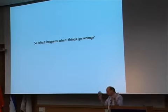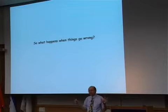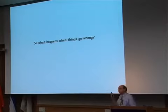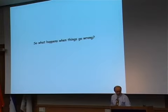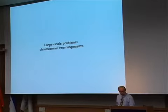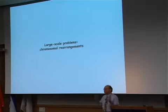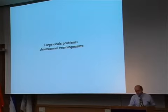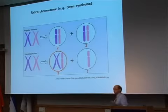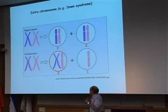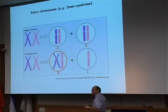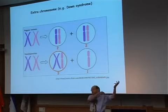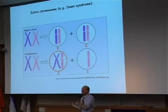That's all we need to know about normal biology. Now let's talk about when things go wrong, because the next two days are about when things go wrong. Let's start with the big picture — large-scale chromosome rearrangements. The biggest large-scale rearrangement one can think of is just getting rid of a chromosome or having too much of a chromosome.